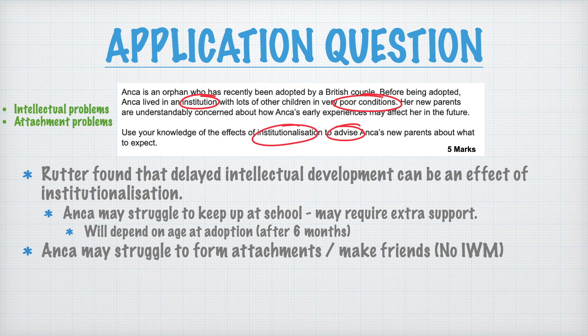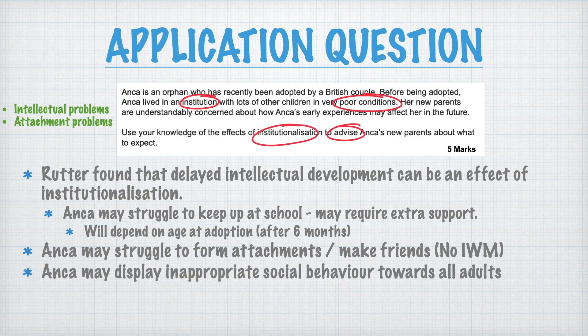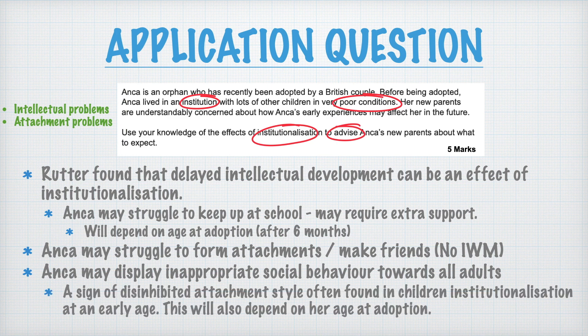If you want to keep it within institutionalization and attachment, you could say Anka may display inappropriate social behavior towards all adults, because that's a sign of disinhibited attachment, which is often found in children who have been in institutions from an early age. This will also depend on her age at adoption. The advice you're giving is that she may display this behavior, so parents need to be aware — it's something you'd want to know to keep your child safe. Just make sure you bring everything back to Anka.